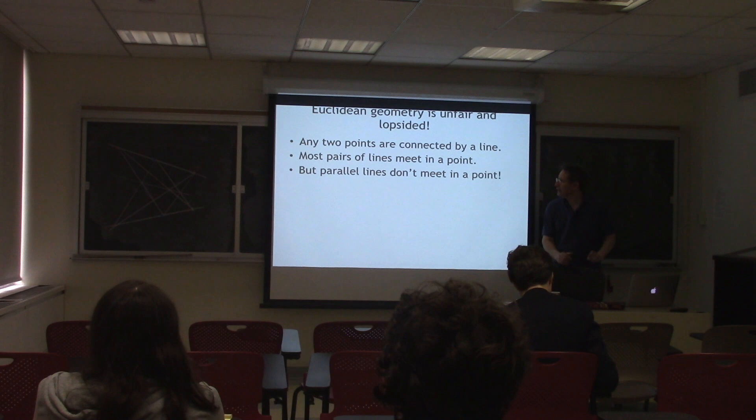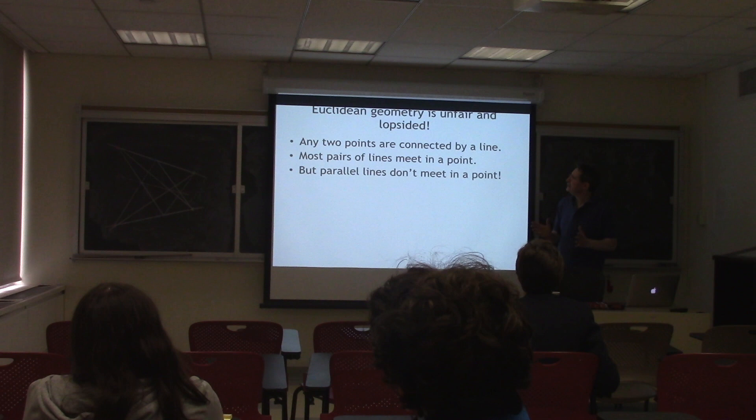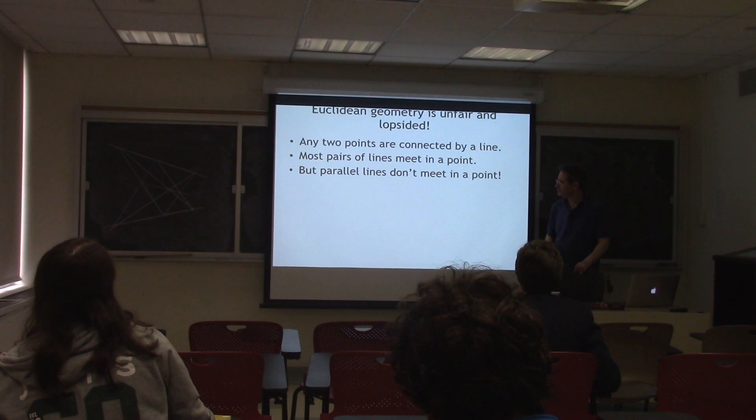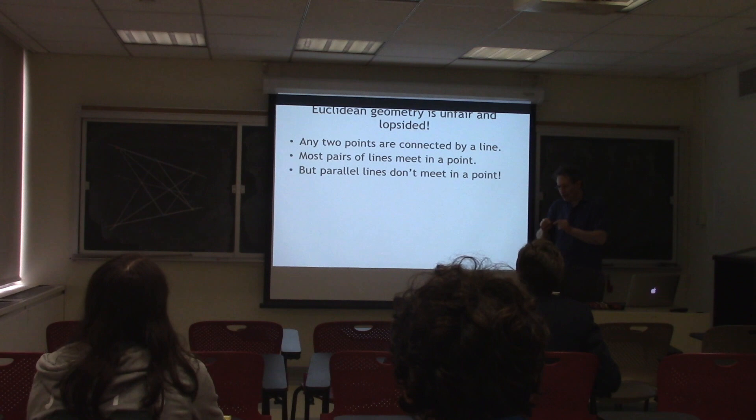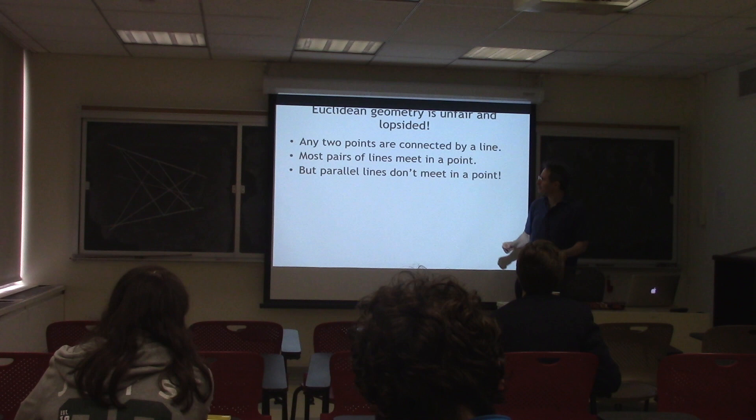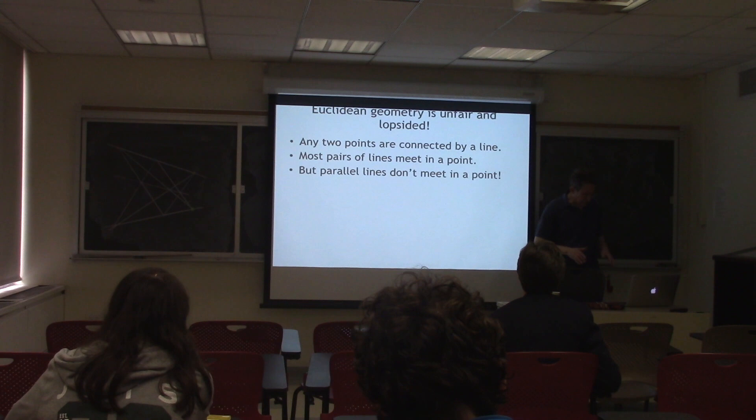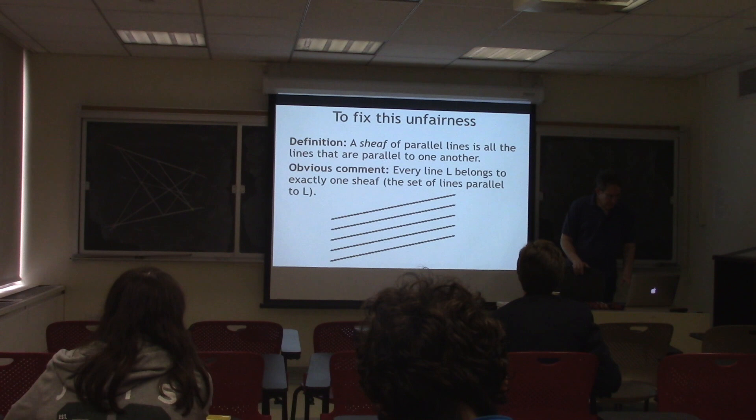We're going to start with the following observation: Euclidean geometry is unfair and lopsided in the sense that any two points are connected by a line, and almost any pair of lines meet in a point — but it's not quite true, because parallel lines don't meet in a point. This is not as symmetric as one would wish, so we're going to fix this.